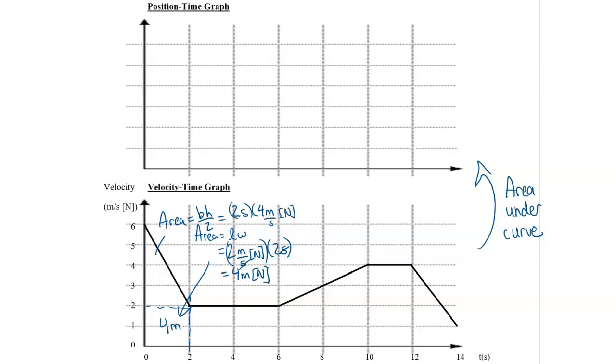The height is from two to six, so that's four meters per second because the units on the velocity axis are meters per second north. So the seconds are going to cancel again, and we're dividing that by two, which again gives us four meters north. So that means the area from zero to two seconds is an area of eight meters total, and so that is what we're going to use for that first bit.